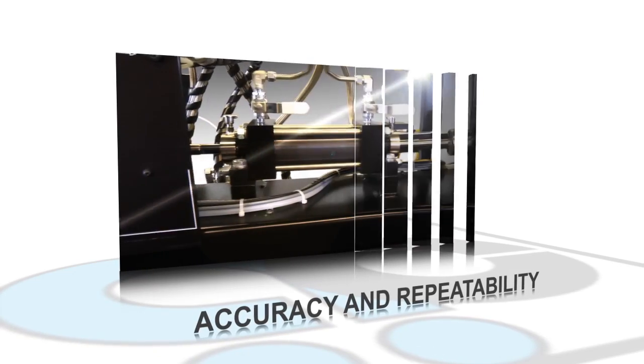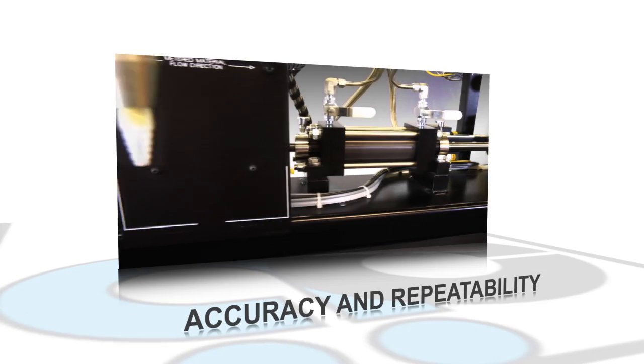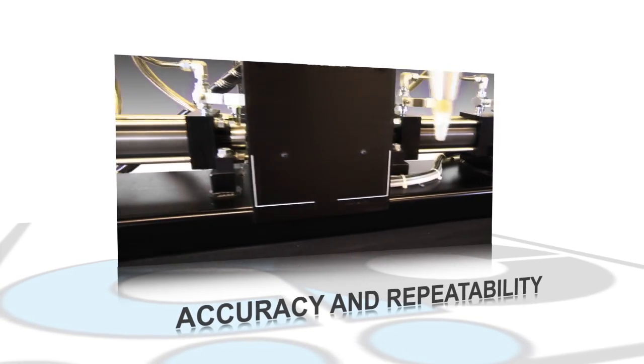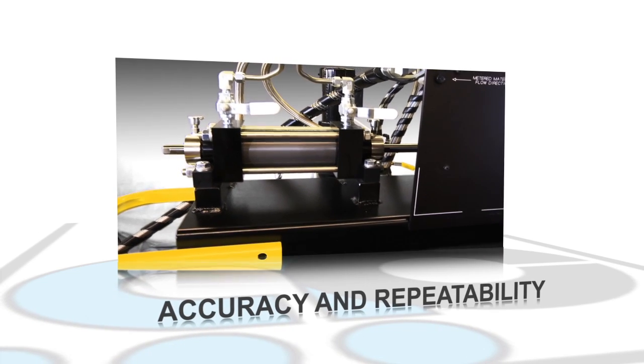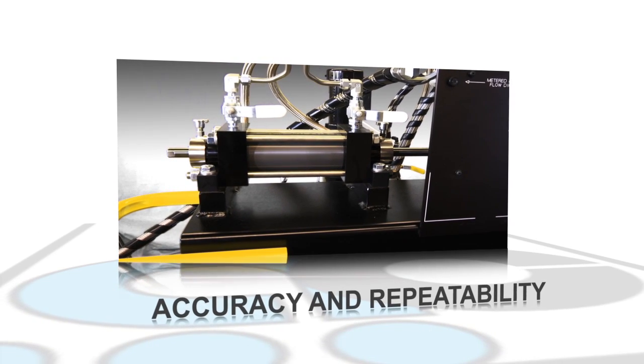The accuracy and repeatability in this process is due to the inline design of the metering cylinders. This inline design prevents mechanical distortion of the system, racking, when processing wide ratio or viscosities.